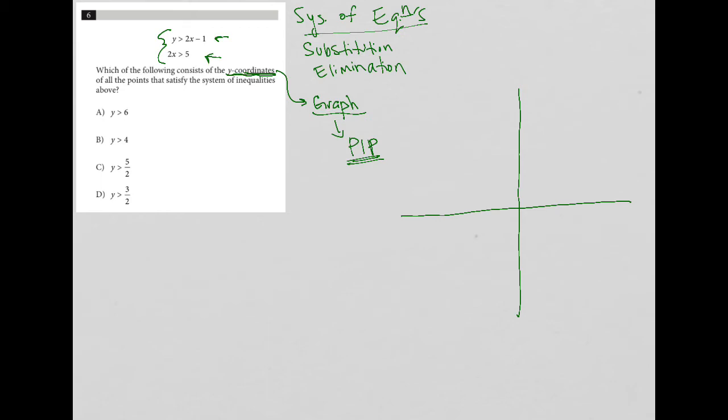Starting with the first one, which I'll graph in red, y is greater than 2x minus 1 is in the form y equals mx plus b. When I say it's in that form, I mean that 2 is m - the number in front of the x is the slope or m value - and negative 1 is the y-intercept or b value.